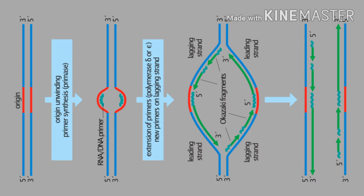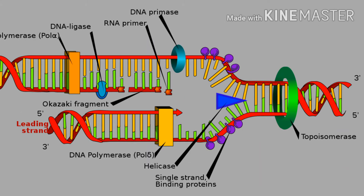Then SSB — single strand binding proteins — bind to the DNA template strands. Then there is a protein responsible to relieve the supercoiling caused due to formation of the replication fork.